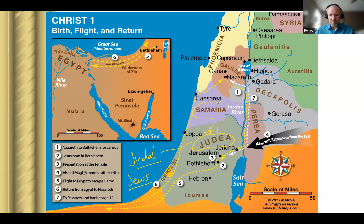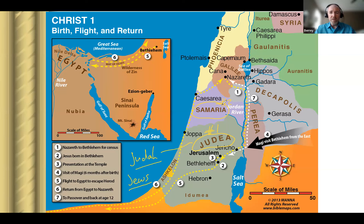Number two is Samaria. Samaria is where we think of half-breeds — they were half-Jew and half-Gentile. This resulted from Gentile peoples being brought in to settle in Samaria toward the end of the Old Testament period. They mingled with the Jews, and their offspring became known as Samaritans. Because they were half-breed Jews and did not follow the temple rituals at Jerusalem, they were not liked by the Jewish people, who looked down on them almost as dogs.